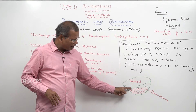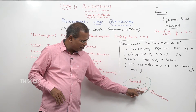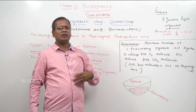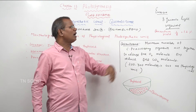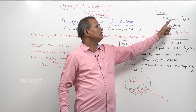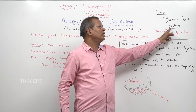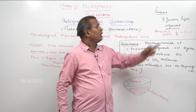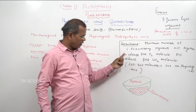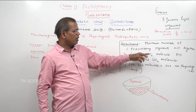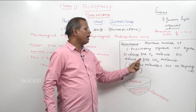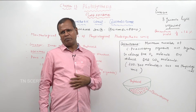See here, this represents the quantosome. And finally, according to Emerson, for the release of one oxygen molecule, 8 quanta of light are required.